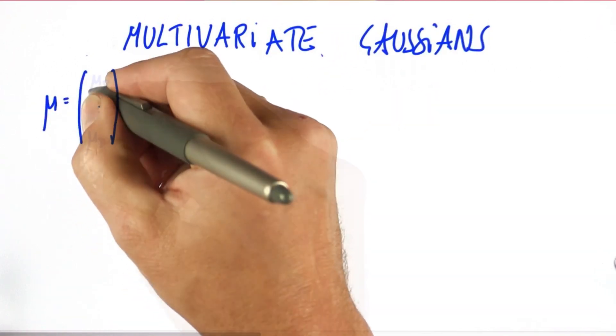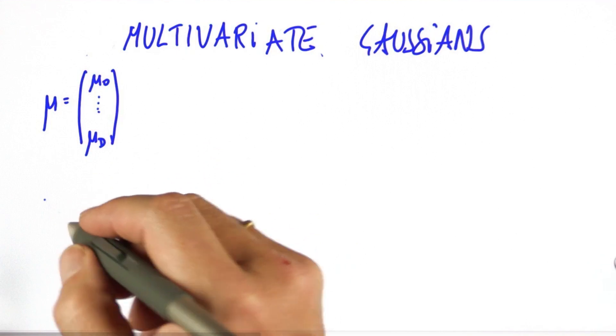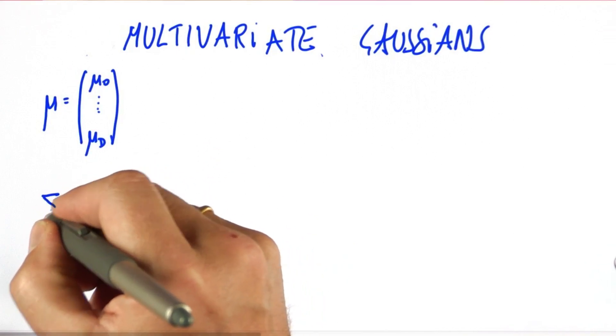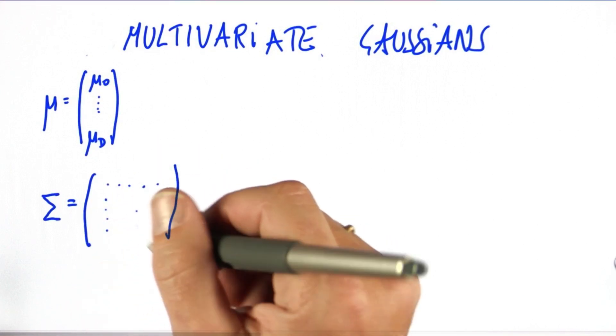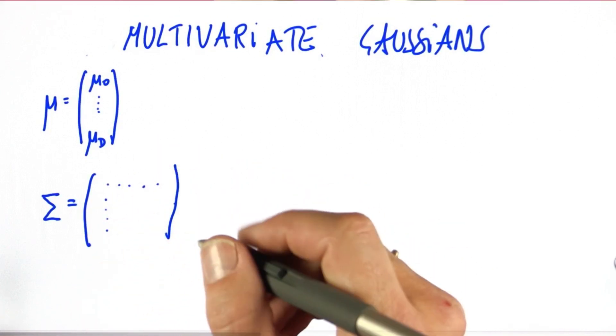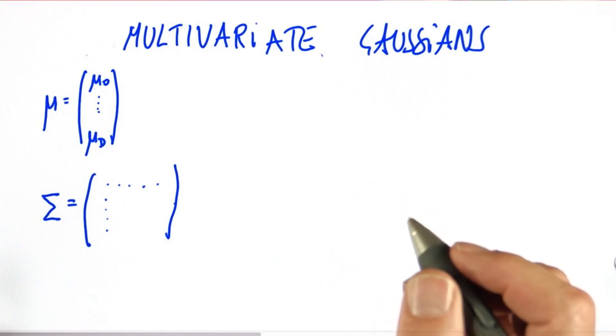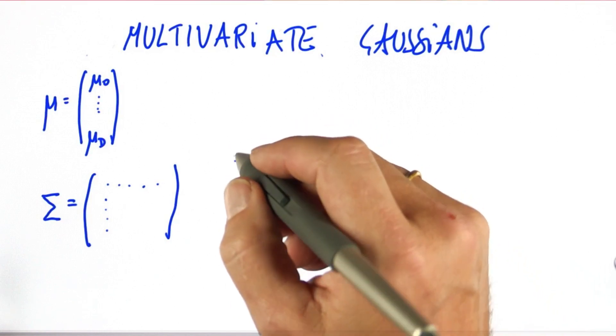The mean is now a vector with one element for each of the dimensions. The variance square is replaced by what's called a covariance, and it's a matrix with d rows and d columns if the dimensionality of the estimate is d.